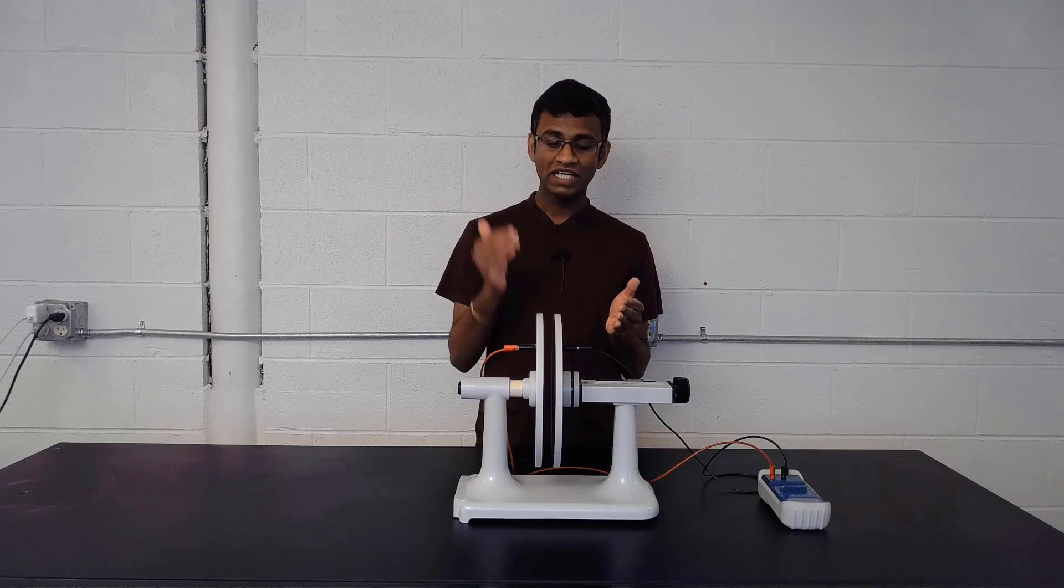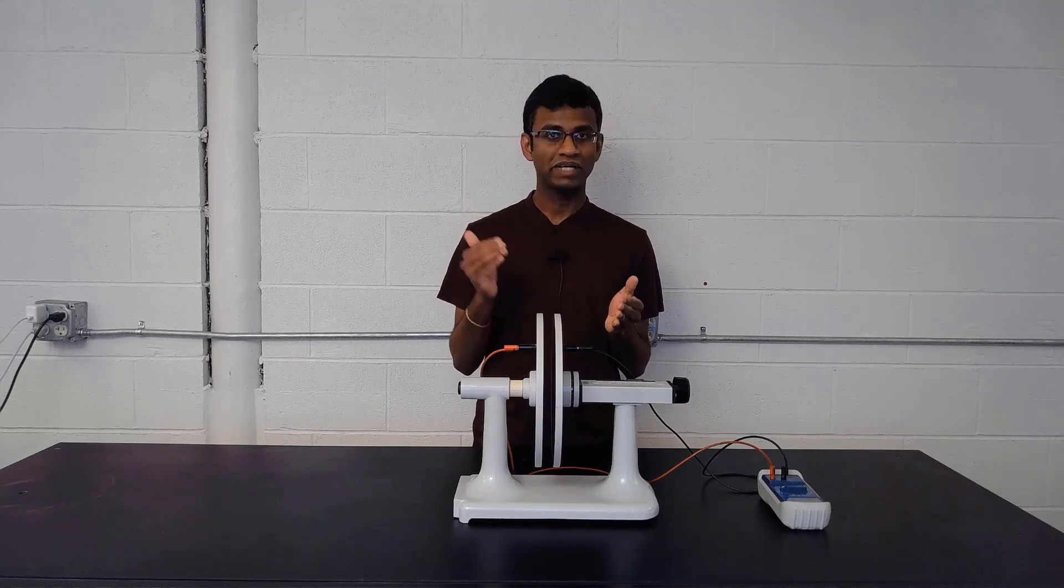A capacitor consists of two electrodes, two conductors, separated by a non-conducting medium. Based on geometry, there is one type of capacitor called parallel plate capacitor.